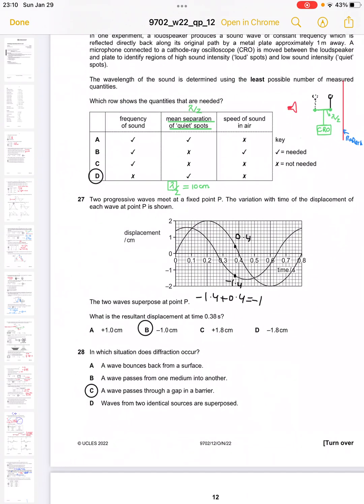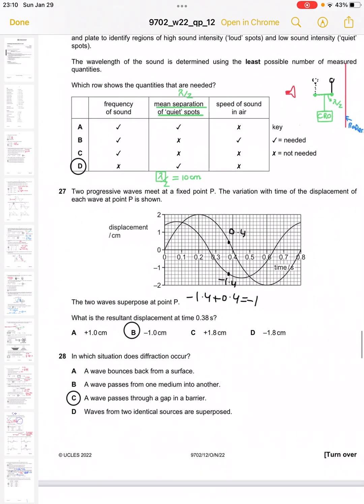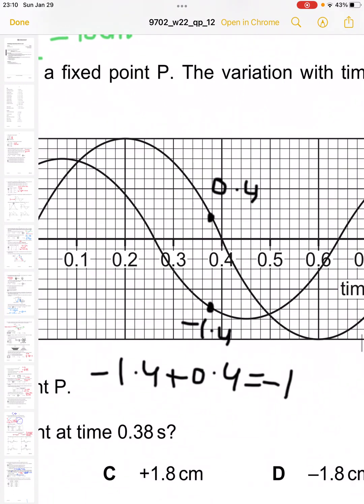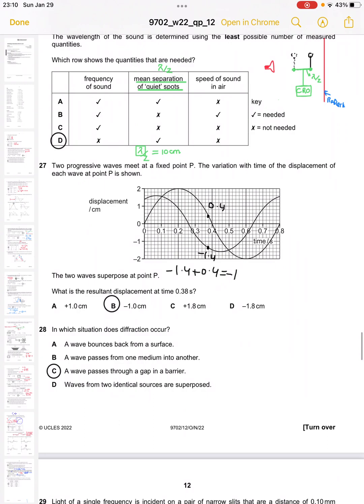Question number 27 asks what is the resultant displacement at time 0.38 seconds. At 0.38, the amplitudes are 0.4 and minus 1.4, so minus 1.4 plus 0.4 is minus 1. B is the appropriate answer.